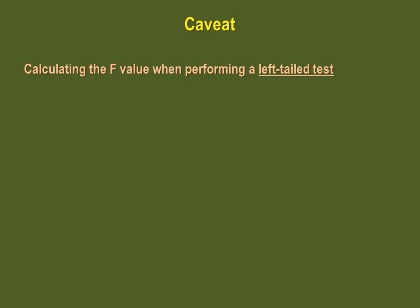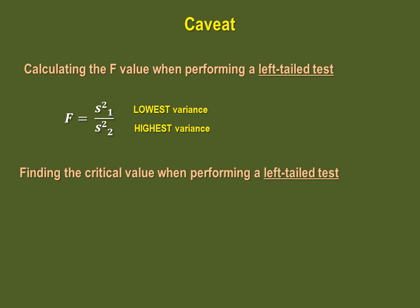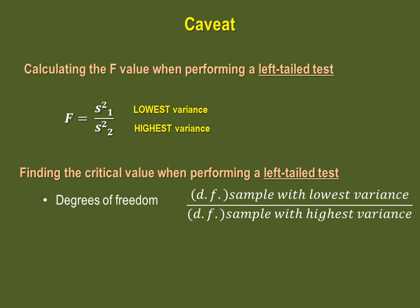The procedure when performing a left-tailed test has a little bit of a twist. When calculating the F value, you must take the lowest variance as your numerator and the highest variance as your denominator. This is also reflected when finding the critical value. Your degrees of freedom are similarly reversed: the numerator uses the degree of freedom for the sample with the lowest variance, and the denominator uses the degree of freedom for the sample with the highest variance. Once you've found the value in the table, you must reciprocate it — for example, if you found a value of 4.68, you take 1 divided by 4.68, which gives you a critical value of 0.21.